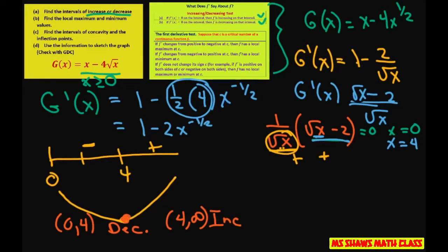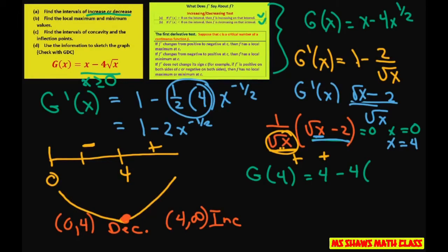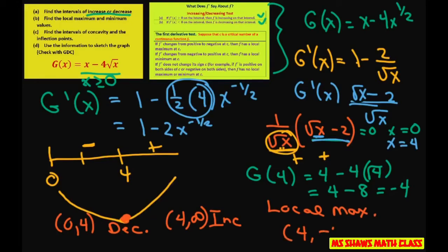That means there's going to be a local minimum. We plug in g of 4: g of 4 equals 4 minus 4 times the square root of 4, so that's 4 minus 8, which equals negative 4. So our local minimum occurs at the point (4, negative 4).